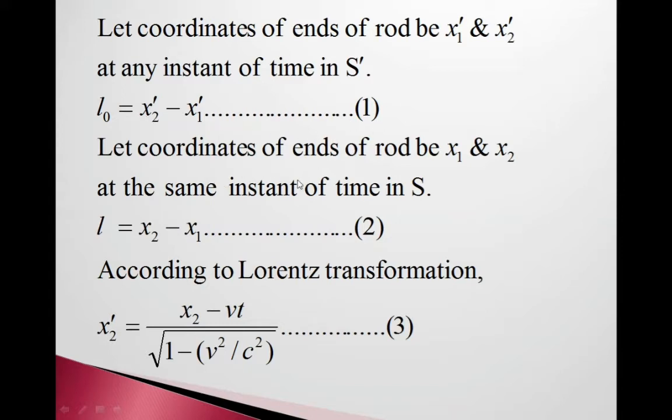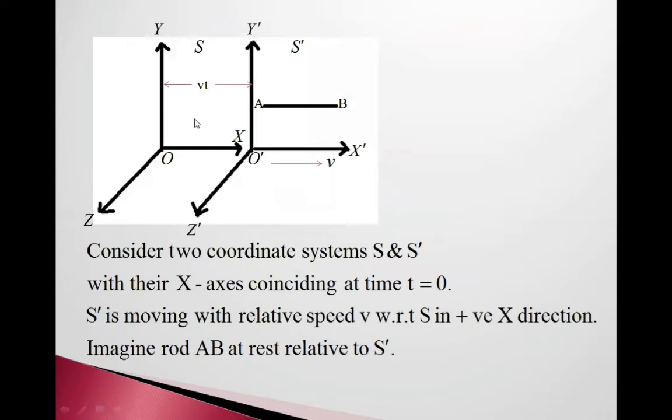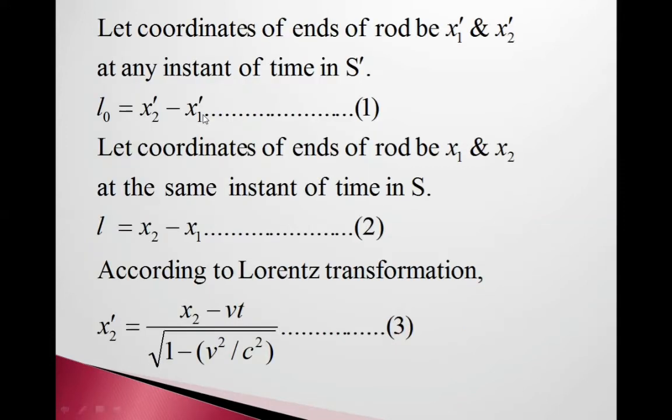Now let coordinates of ends of the rod be x1 and x2 in frame S at the same instant of time. Its length L equals x2 minus x1, equation 2.